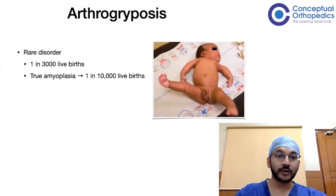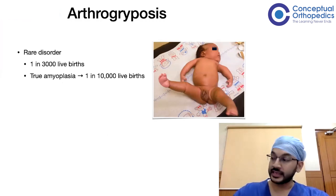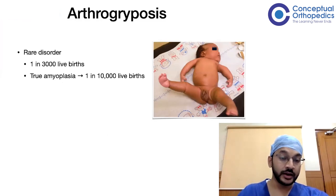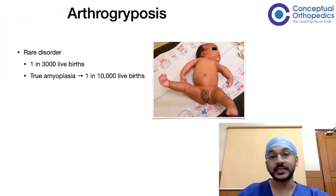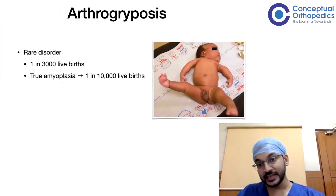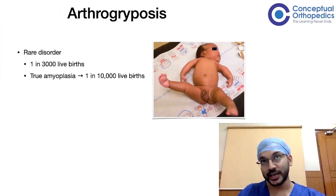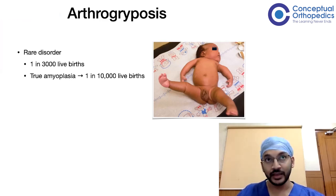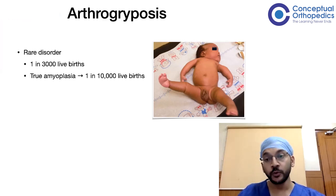Arthrogryposis is a rare disorder with an incidence of one in three thousand live births. However, true amyoplasia — the classical form — is far less common, at one in ten thousand live births. Parents can be counseled that true amyoplasia is not genetically transmitted, and the chance of their next child having it is one in ten thousand.